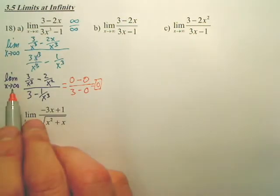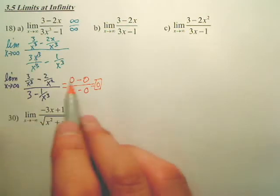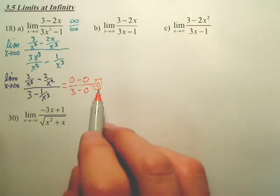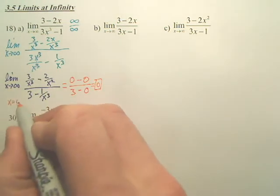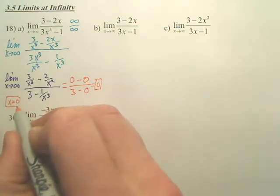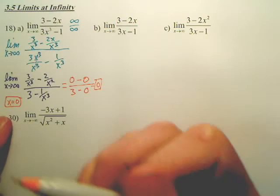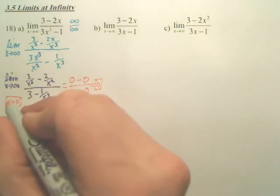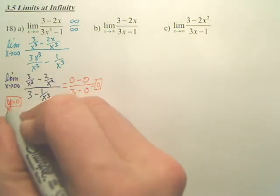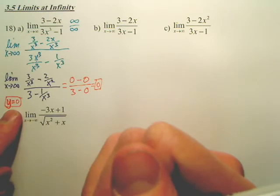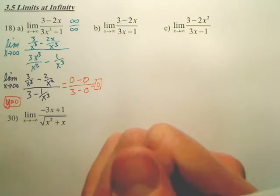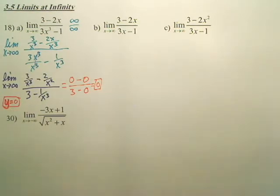So as we go to infinity, your graph is going towards 0. You actually have a horizontal asymptote — horizontal asymptote lines are y equals. y equals 0 is actually a horizontal asymptote on the infinity side. It could be different on the negative infinity side.